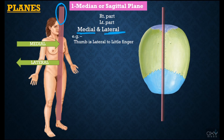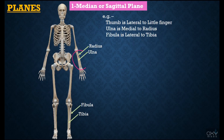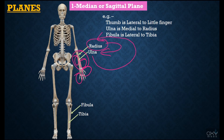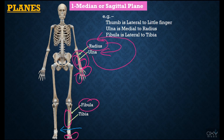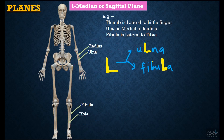On the basis of this plane we have two anatomical terms: medial and lateral. For example, the thumb is lateral to the little finger, or the little finger is medial to the thumb. The bone in the forearm present towards the thumb is called the radius, and the bone present towards the little finger is called the ulna. Therefore, the radius bone is lateral to the ulna bone, or the ulna bone is medial to the radius bone. Similarly in the leg, the fibula bone is present towards the little toe and the tibia bone is present towards the big toe. Since the big toe is medial to the little toe, the tibia bone is medial to the fibula bone, or the fibula bone is lateral to the tibia bone.